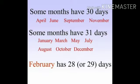Some months have 30 days — kuch months mein 30 days hote hain — like April, June, September and November. Then some months have 31 days — kuch months aise hote hain jin mein 31 days hote hain — like January, March, May, July, August, October and December.